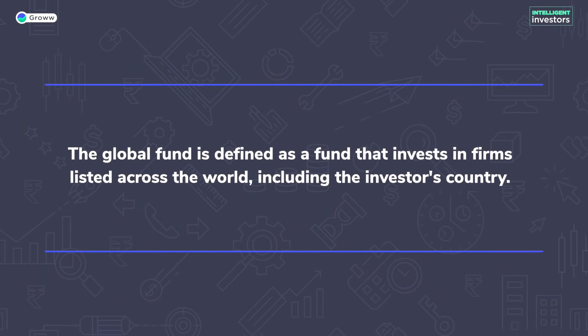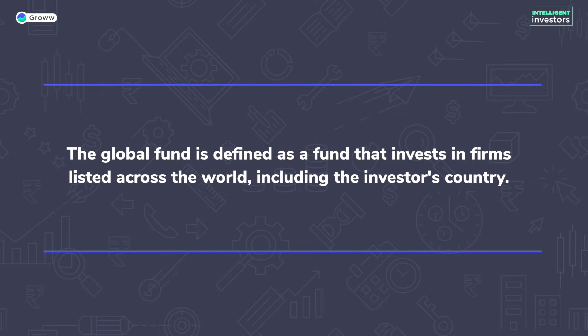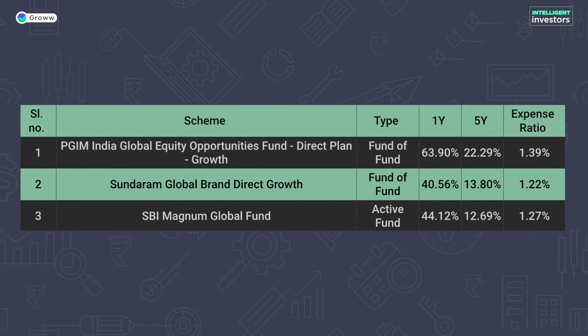Global funds invest across the world without being tied to a particular geography. There are six such funds in India; the top three by five-year return are: PGIM India Global Equity Opportunities Fund — a fund of fund — at 22.29% with an expense ratio of 1.39%; Sundaram Global Brand Direct Growth — a fund of fund — at 13.8% over five years with an expense ratio of 1.22%; and SBI Magnum Global Fund — an active fund — at 12.69% with an expense ratio of 1.27%.